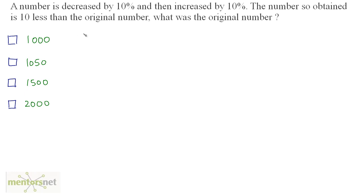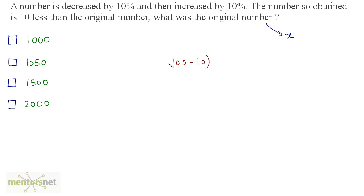A number is decreased by 10% and then increased by 10%. The number so obtained is 10 less than the original number. What was the original number? Let us consider the original number as x. The decreased number is equal to 100 minus 10% of x, which gives 90% of x, or 90 by 100 times x.